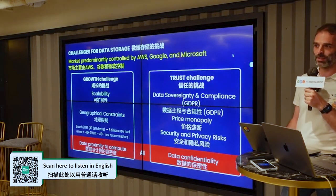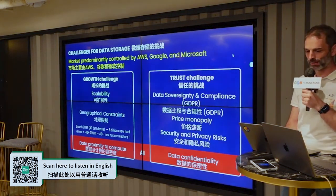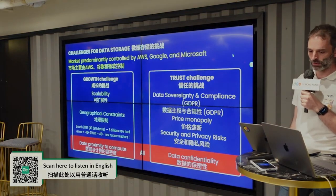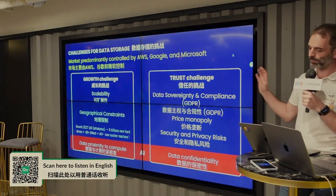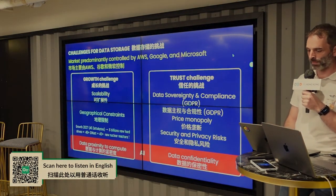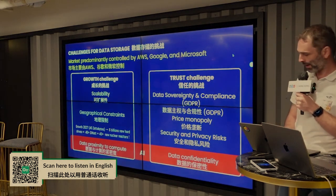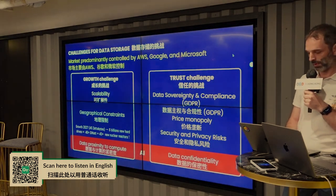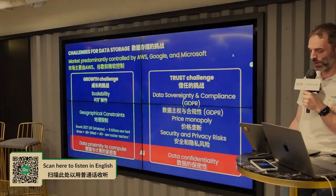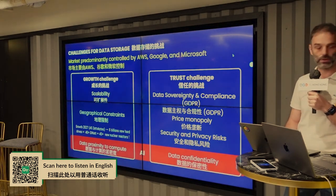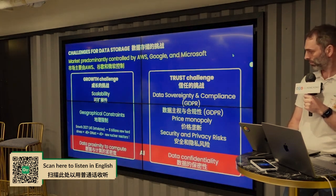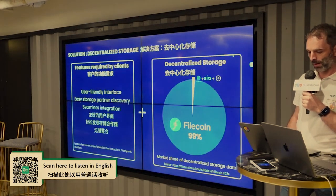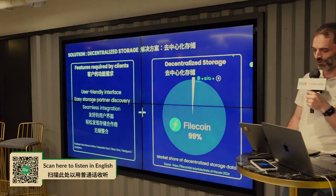I'm not going to spend too much time on this slide because it's overlapping with what Paul just mentioned, but we all know that there is a centralized market. There is a growth challenge and a trust challenge with them, and we have AI who is going to amplify these two challenges. So of course, the solution is decentralized storage.